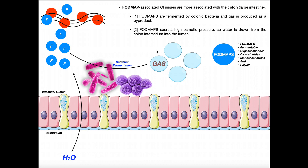There's another mechanism that also causes this bloated feeling and even diarrhea with FODMAP consumption: FODMAPs, in contrast to many other food products, exert a very high osmotic pressure. That means they are attracted to water — anywhere you put FODMAPs, water is going to be drawn toward them. Here is the wall of the large intestine or colon, with the lumen up top in the GI tract tube.